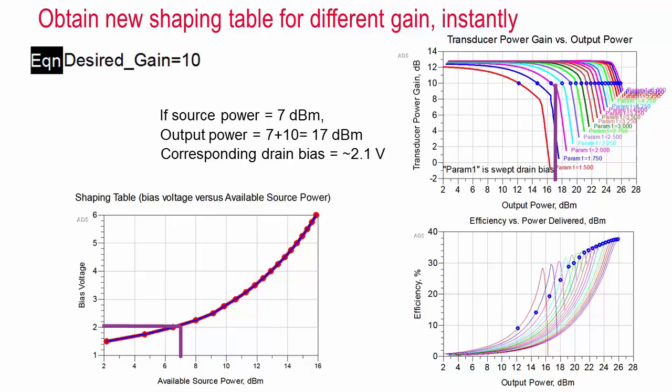Note that if the available source power is below 2 dBm in this case, we hold the drain bias constant at 1.5 volts. So we are effectively turning off envelope tracking for low input power signals, which causes the gain to rise for these low input powers. You don't want to allow the drain bias to drop too low, which will stress the power amplifier, but you have to decide how low to allow it to go.